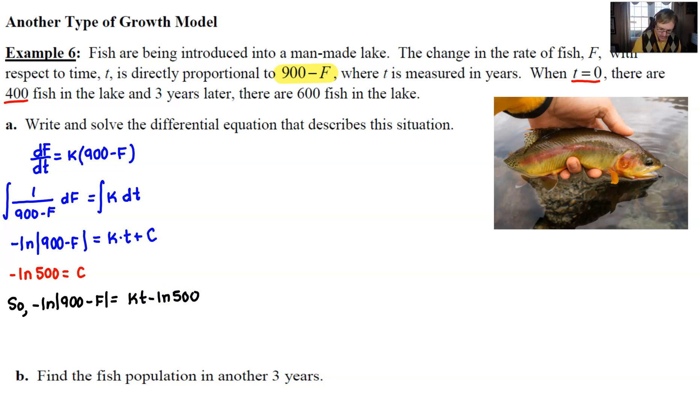To find our value of k, we use another piece of information that says three years later, there are 600 fish in the lake. I'm going to plug t equals three in for t and 600 in for F. So if I do that, we have negative natural log of 900 minus 600, which is 300, and that's equal to k times three minus our natural log of 500.